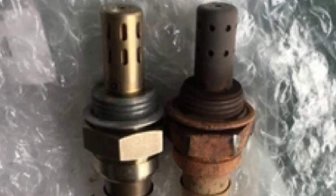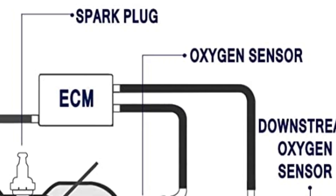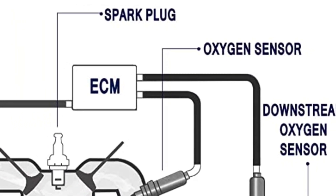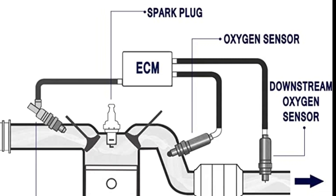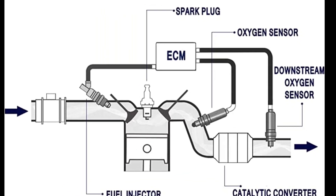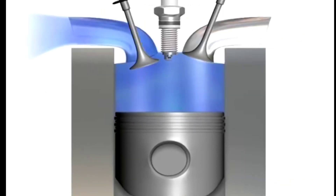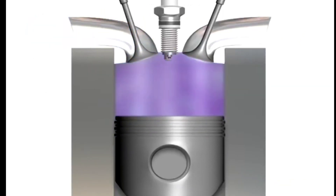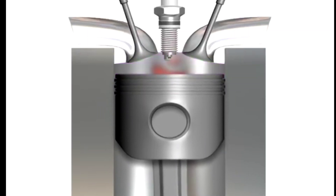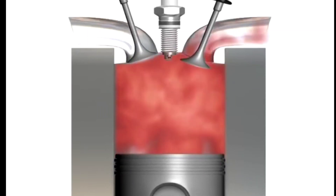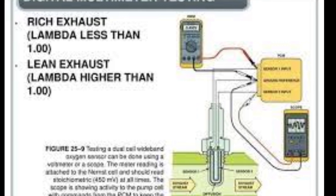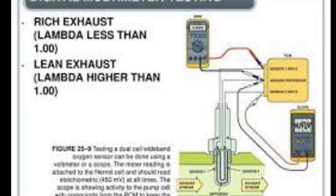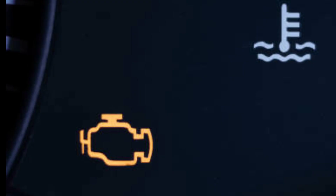If the oxygen sensor is not working properly, it may send incorrect readings to the engine control module, or ECM, about the amount of oxygen in the exhaust gases. This false reading can lead to an incorrect air-to-fuel mixture, poor fuel economy, and increased emissions. The ECM may also detect a problem with the oxygen sensor circuit or signal, which can trigger the check engine light.